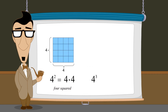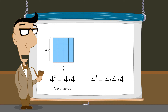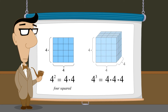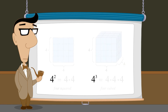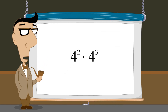Likewise, raising a number to the third power is equivalent to multiplying three copies of that number together. Since this is the same operation one would perform when calculating the volume of a cube, the number is said to be cubed. Individual exponential expressions can be combined into larger expressions through operations such as addition, subtraction, multiplication, and division. For instance, we can multiply the two exponential expressions four-squared and four-cubed, creating a larger expression.